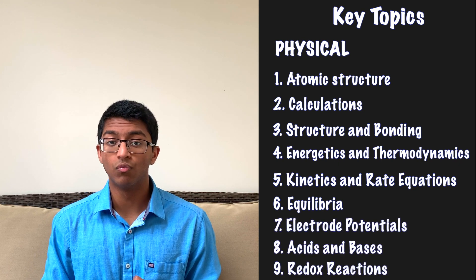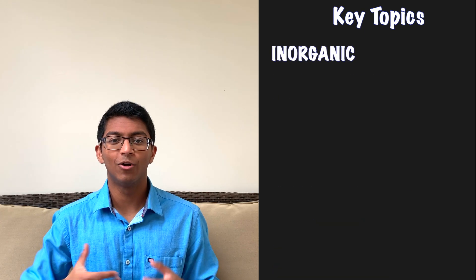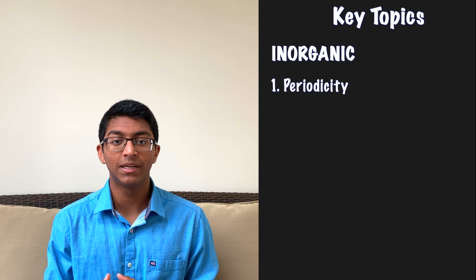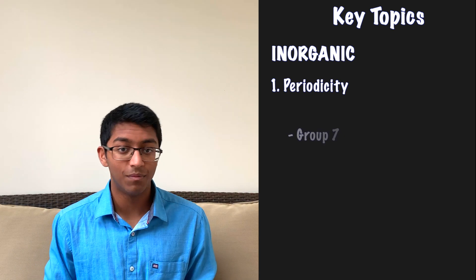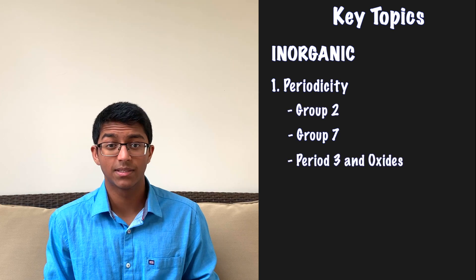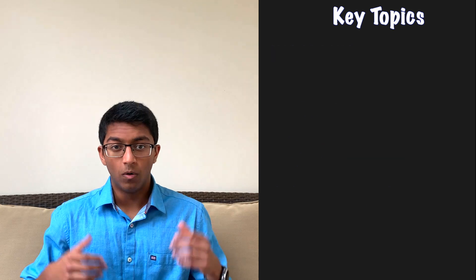Redox chemistry is also really important to understanding these concepts. Moving on to inorganic chemistry, a lot of it can be summarised as periodicity and understanding general trends across the periodic table, which allows you to predict the behaviour of potentially unfamiliar compounds. This includes group 7, group 3, period 3 and the oxides. You also have transition metals at the end, which is a really nice topic conceptually.